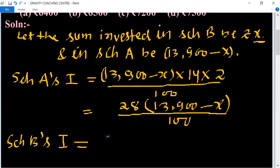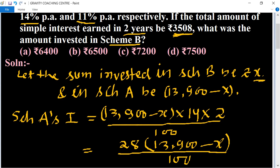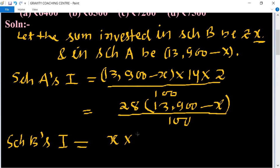And the interest for scheme B, scheme B's interest equals its principal X, rate of interest is 11%, multiplied by 2, upon 100, which equals 22X upon 100.